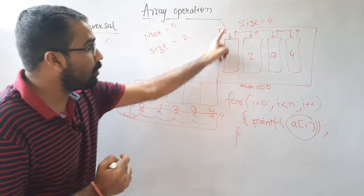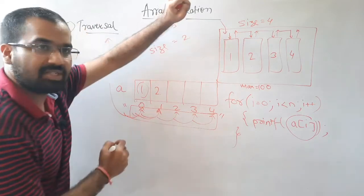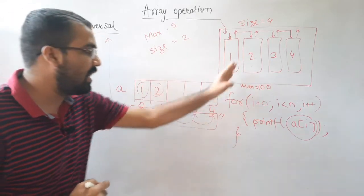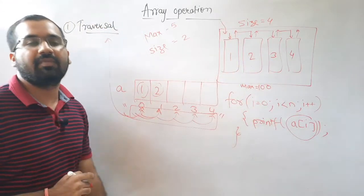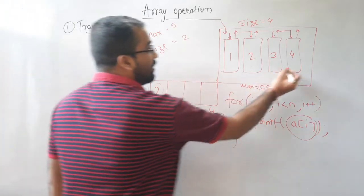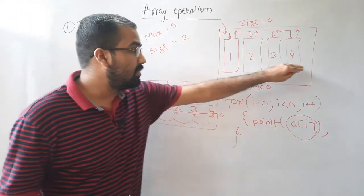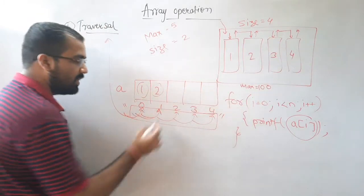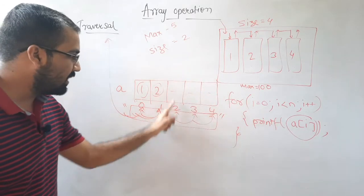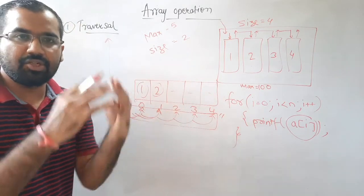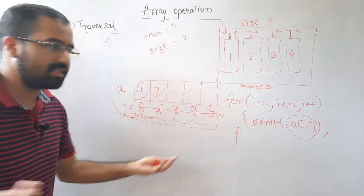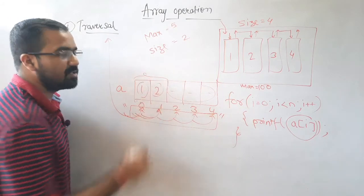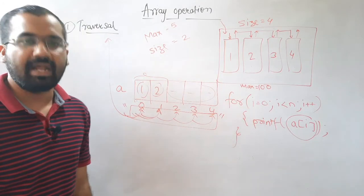Visiting house number one means visiting index zero, and giving sweets means printing the element at that index. You move ahead to the next house, print the next element, and so on — but only up to house number four, because beyond that nothing is constructed. Indices with no elements — blank positions — will not be traversed.